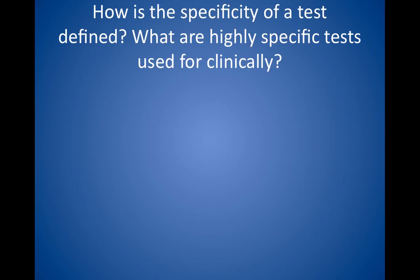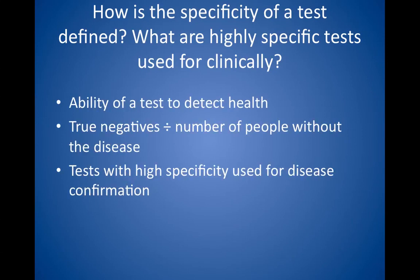How is the specificity of a test defined? What are highly specific tests used for clinically? Specificity is defined as the ability of a test to detect health or non-disease. Mathematically, it is the number of true negatives divided by the number of people without the disease. Tests with high specificity are used for disease confirmation. False negative results occur, but the test does not call anyone sick who is actually healthy — it has a low false positive rate. The ideal confirmatory test must have high sensitivity and high specificity; otherwise, people with the disease may be called healthy.